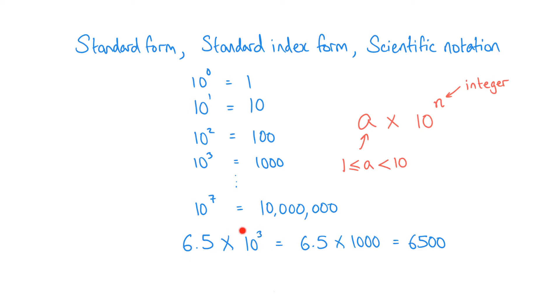So come back to this. This is in standard form because the 6.5, that's our a here, it is between 1 and 10. And do we have that multiplied by 10 to a power like we need? Yes we do. In this case it's 10 to the power of 3, so the n is 3 in this particular example.